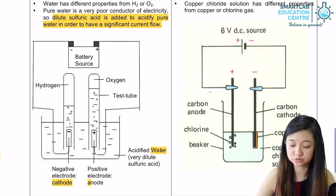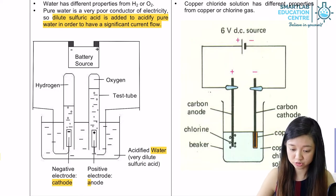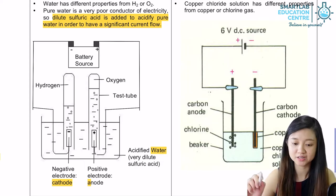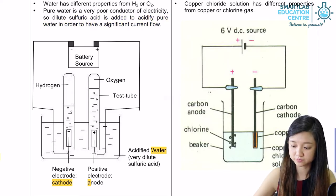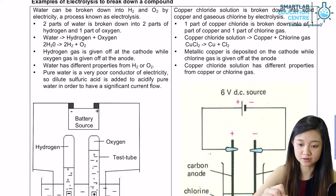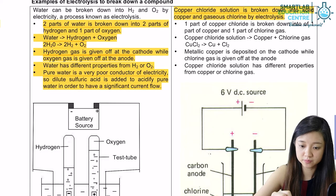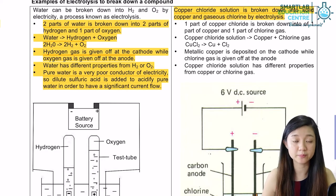As the current passes through the acidified water, the water is broken down into its original elements, hydrogen at the cathode and oxygen at the anode. Notice also that the amount of hydrogen collected is actually twice the amount of oxygen collected. Why is this so? Because two parts of water is broken down into two parts of hydrogen and one part of oxygen.